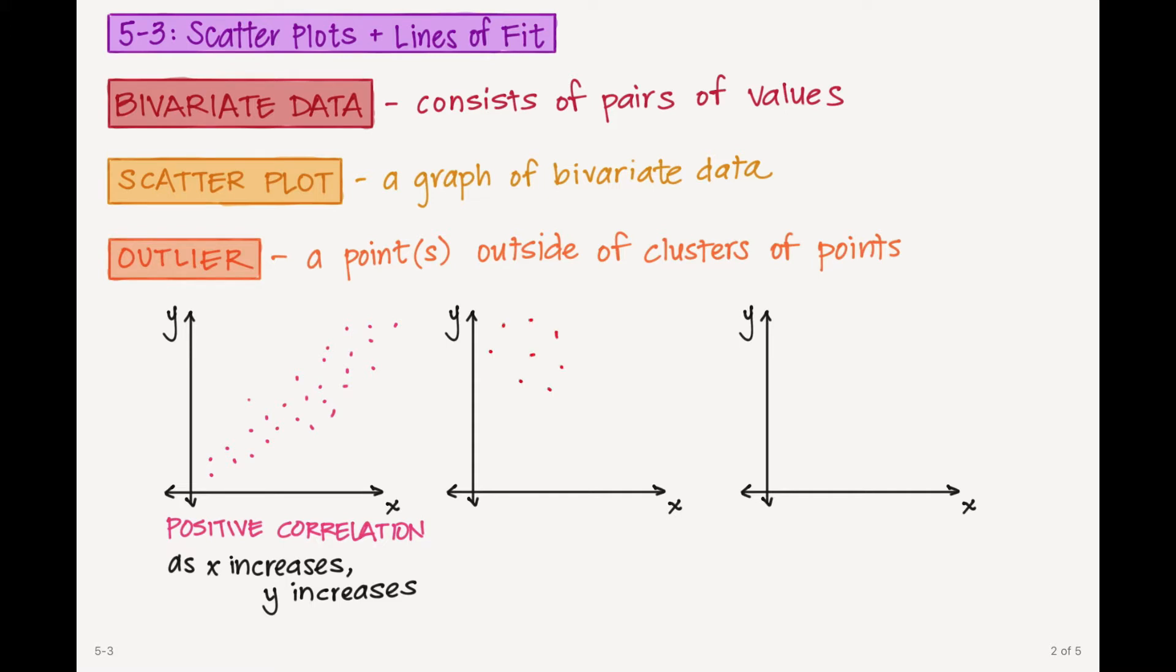Whereas I might have a collection of points from my data, again they're all random, but in this instance I would say that they have a negative correlation. Do you see how they're all going downward? So I could say as x increases, the y values instead are decreasing.